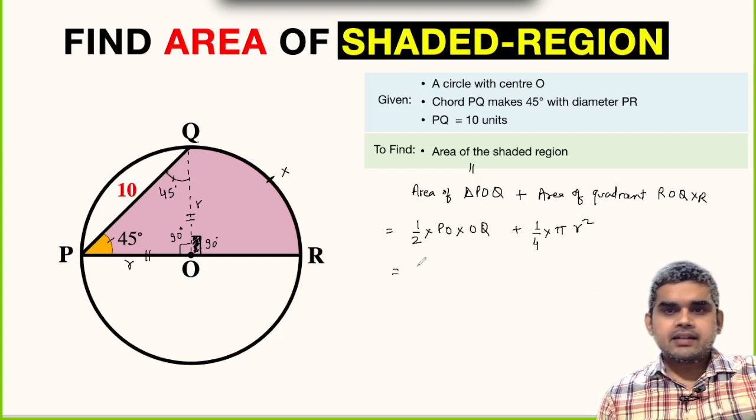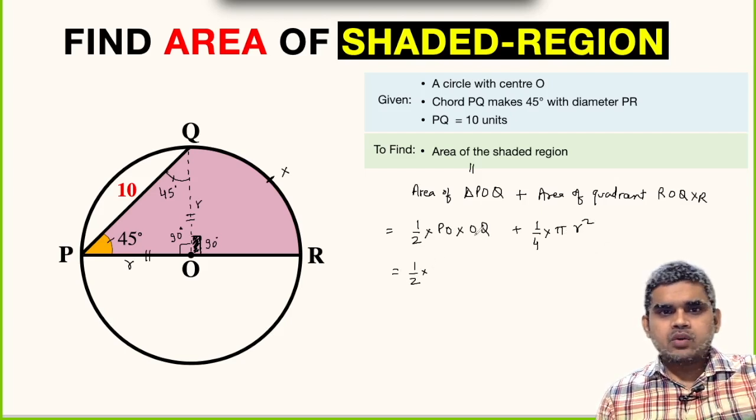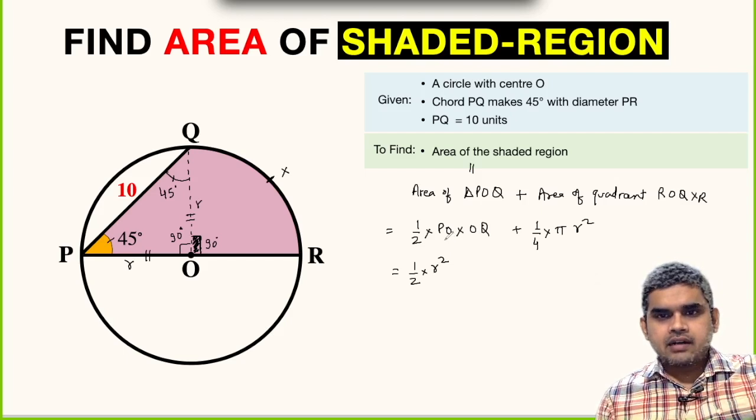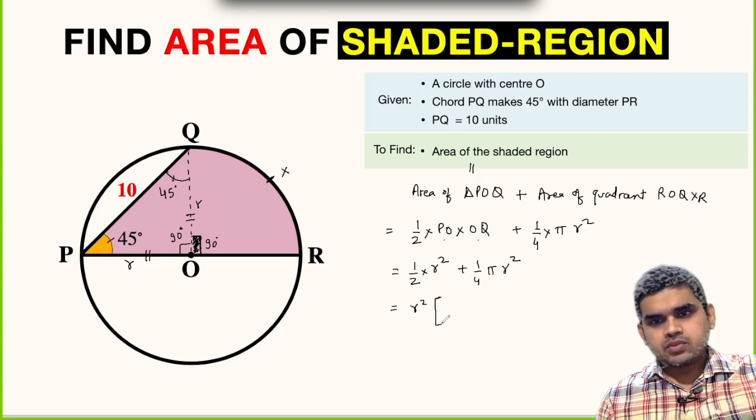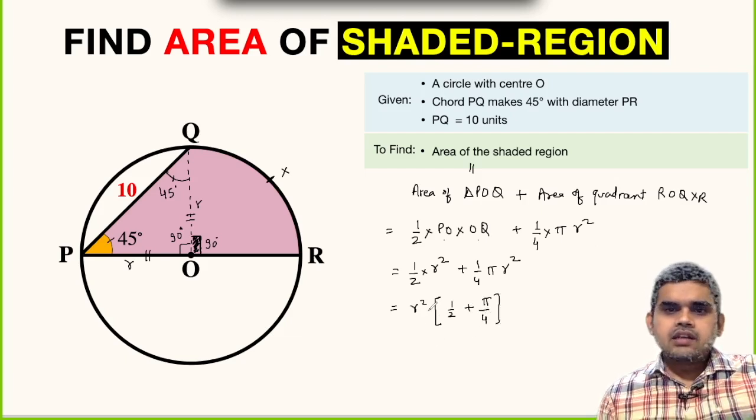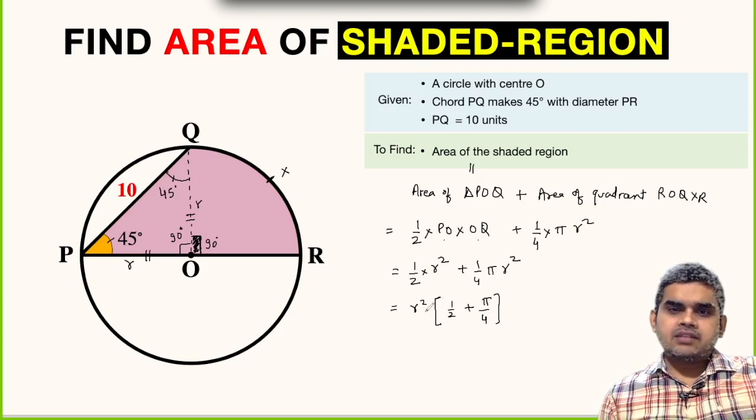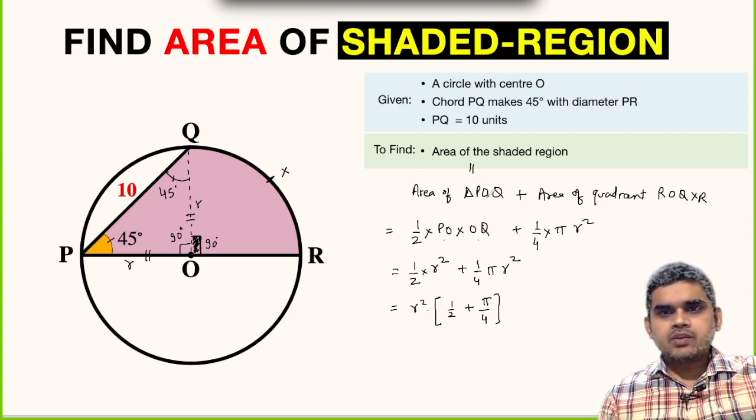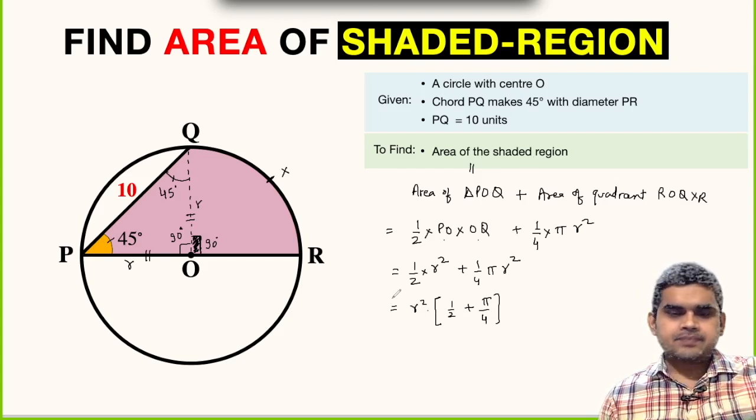Moving ahead, this will be half times R² (since PO and OQ are equal) plus 1/4 π R². We can take out R² common from both the terms. This will be R² times (1/2 plus π/4).